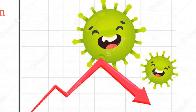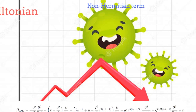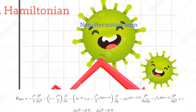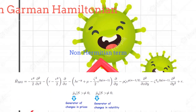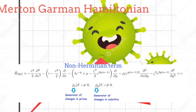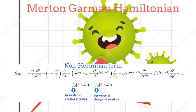The same situation can be found inside the Merton-Garman equation, which is an extension of the Black-Scholes case in order to include the volatility as a random variable. Here again, the symmetry under changes of the prices is spontaneously broken, and additionally the symmetry under changes of volatility is also spontaneously broken. Note that in this case, also for some combinations of the parameters of the system, the Hamiltonian becomes Hermitian.